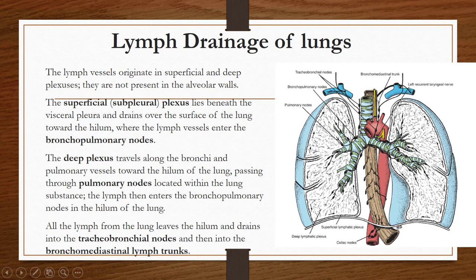The deep plexus is present around the bronchi and the pulmonary vessels. Lymph passes first through the pulmonary nodes located within the lung substance, then enters the bronchopulmonary nodes at the hilum of the lung, then enters the tracheobronchial lymph nodes, and from there drains into the bronchomediastinal lymph trunk.